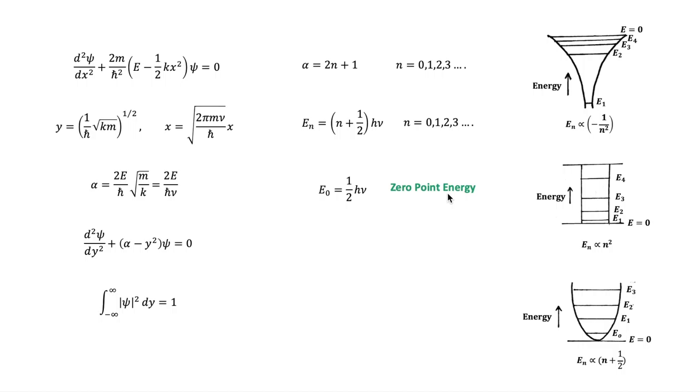This shows that a harmonic oscillator in equilibrium with its surroundings will approach the energy E₀ as the temperature approaches 0 Kelvin. It will not approach E = 0.